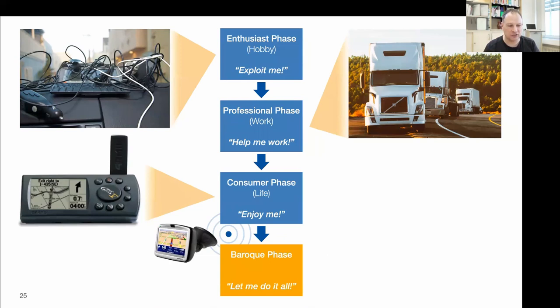Ultimately the sweet spot was the stick-on GPS navigation system for cars that you all know: buy it at your local electronics store, stick it to your dashboard, tap in a destination address and go. That was the game changer — it totally led to the fact that people don't know what their cities look like anymore because they navigate using GPS. But after reaching that sweet spot, the NAVSAT system entered a baroque phase where more and more features were added to it.